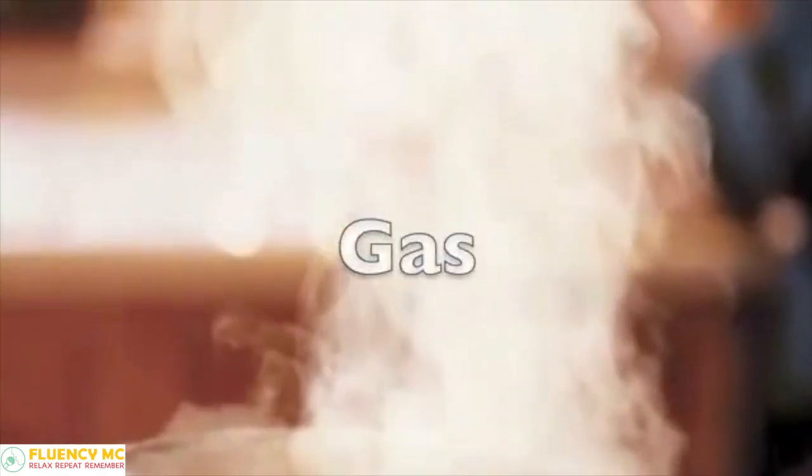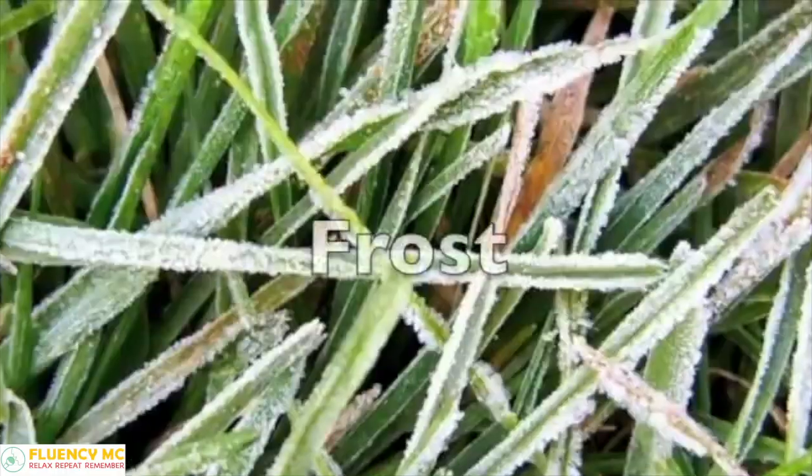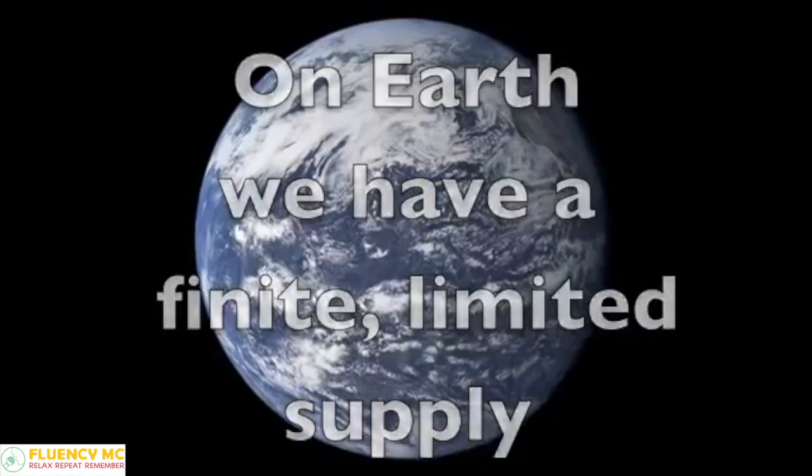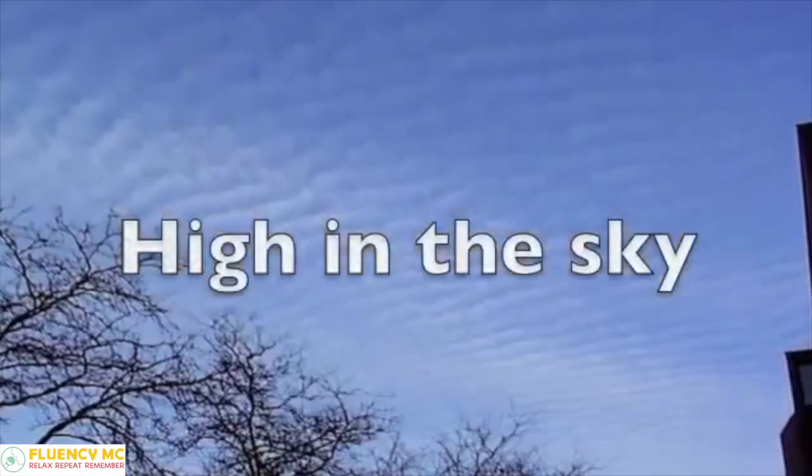It changes from gas to liquid to solid. It's steam, fog, dew, frost, hail, sleet, and snow. On Earth we have a finite, limited supply on the land, in the oceans, and high in the sky.